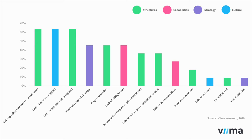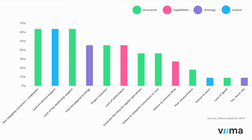A couple of years ago we did a thorough meta-analysis of available research on where innovation management goes wrong, and the results are a cautionary tale. To borrow the Anna Karenina principle: all successful innovators are alike, but unsuccessful ones fail for a variety of different reasons — and usually there's more than just one. Every innovator makes mistakes, but the successful ones notice them, learn from them, and fix them before they become showstoppers. Becoming an innovative organization is a process of continuous learning and transformation that no one gets right off the bat.